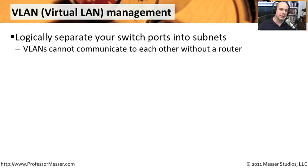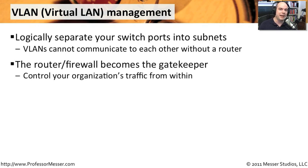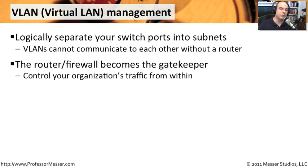From a networking perspective, we're usually doing this because we want to separate out things from an IP addressing perspective. From a security manager's or a security administrator's perspective, we're often doing this so that we can separate out different parts of the organization. You might want to put the HR department on one VLAN, the shipping and receiving department on a completely different VLAN. So now you're allowing your firewall or router to be the gatekeeper to prevent the HR people from directly communicating to the folks in shipping and receiving and vice versa.